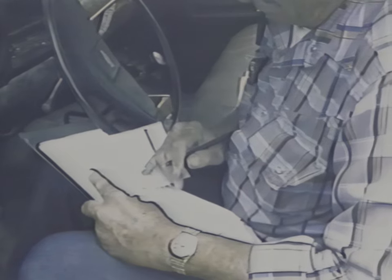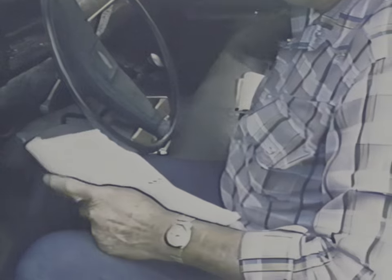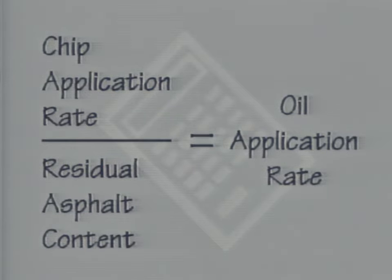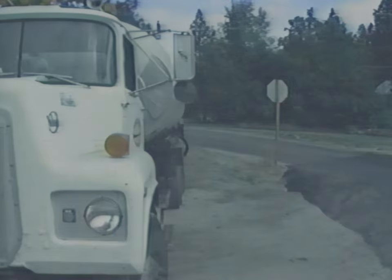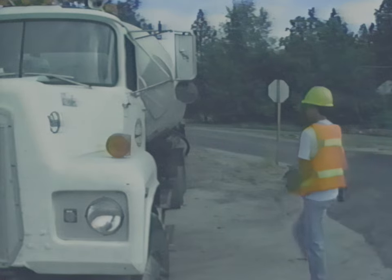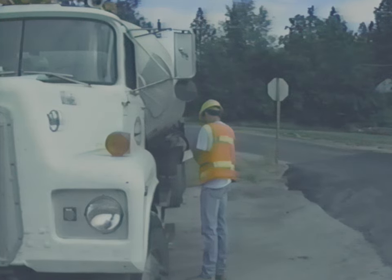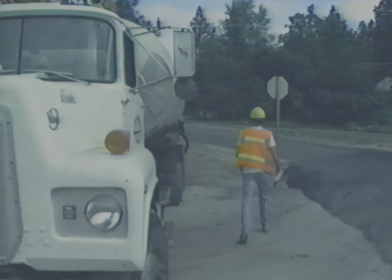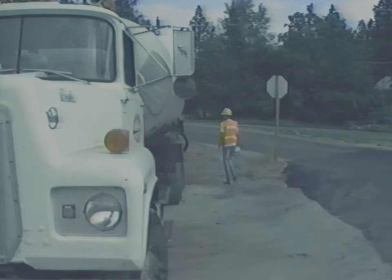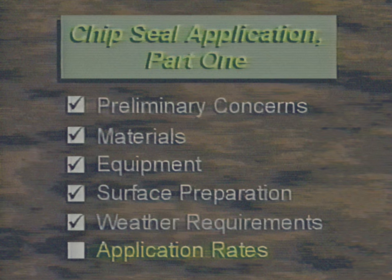To determine the application rate for the oil, you first need to know the percentage of residual asphalt content of the liquid asphalt being used. The standard for an emulsion is 63%. Dividing the chip application rate by this percentage gives you the oil application rate in liters per square meter. For further information on determining chip seal application rates, contact your state's Technology Transfer Center. In Part 2, we'll show you how to check application rates as part of the overall chip seal operation. And with that, we've looked at everything you need to do to get ready for chip sealing.